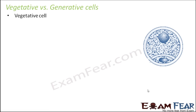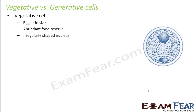So we'll first talk about the vegetative cell, the one which is bigger in size. It has abundant food reserve, so it can provide nourishment to whatever is inside it, because this cell in many cases engulfs the smaller cell. It has an irregularly shaped nucleus, so it doesn't have a specific shape — neither completely spherical nor completely spindle shaped.